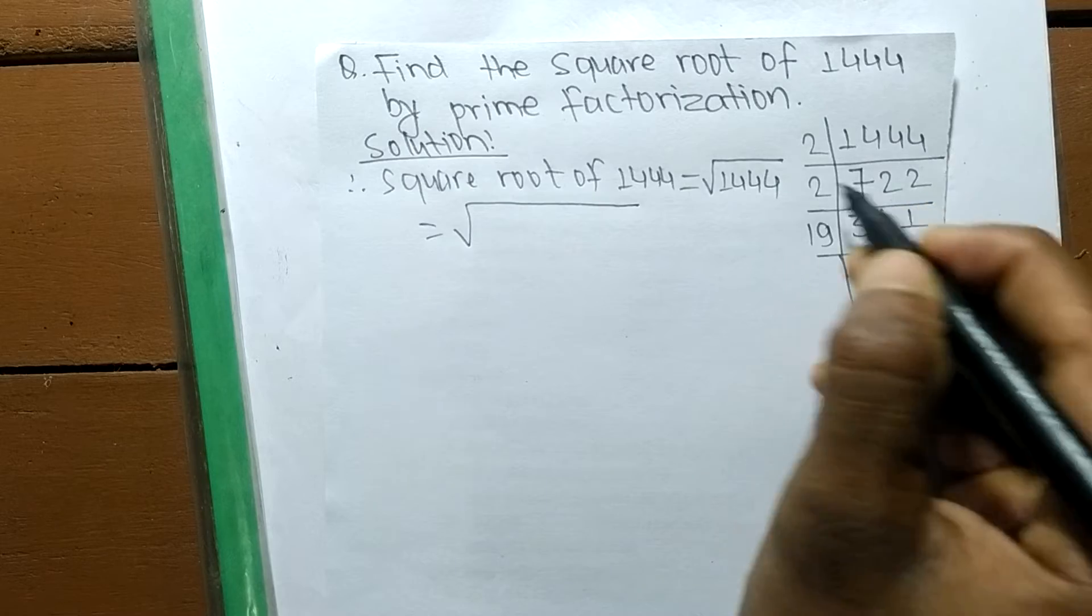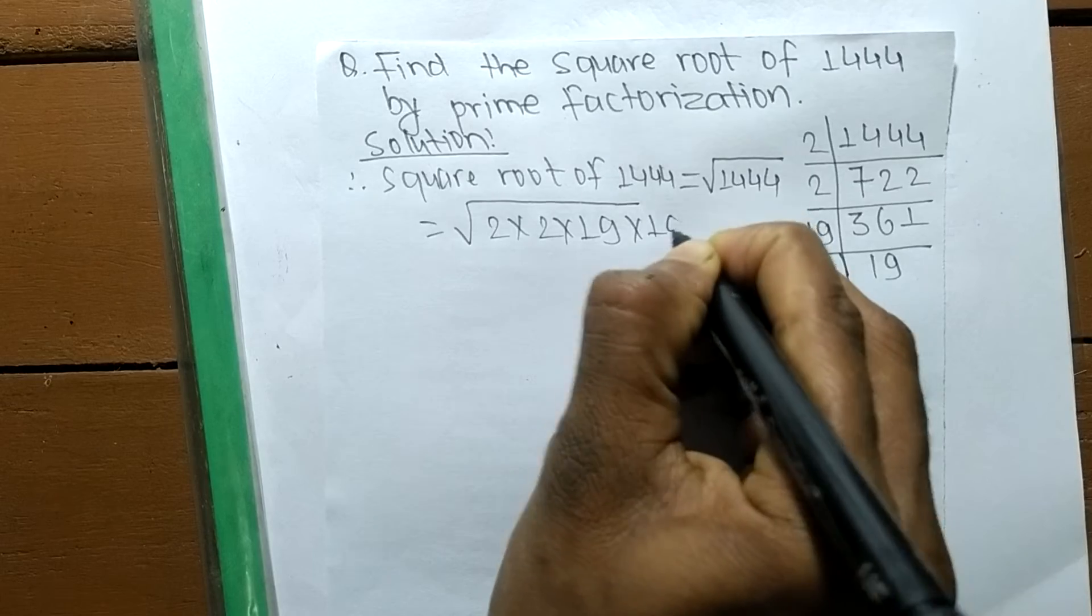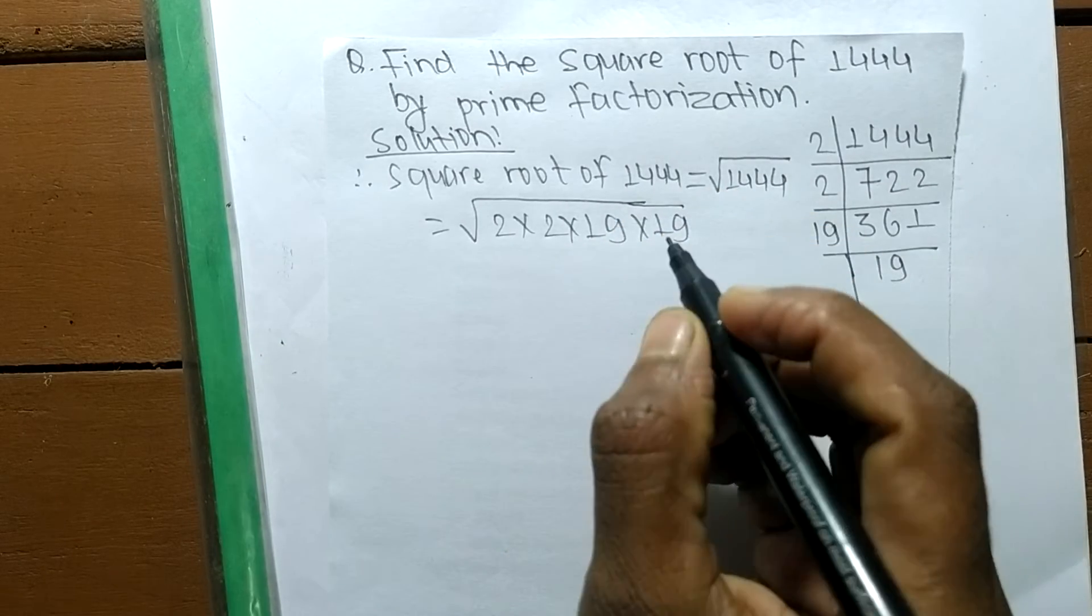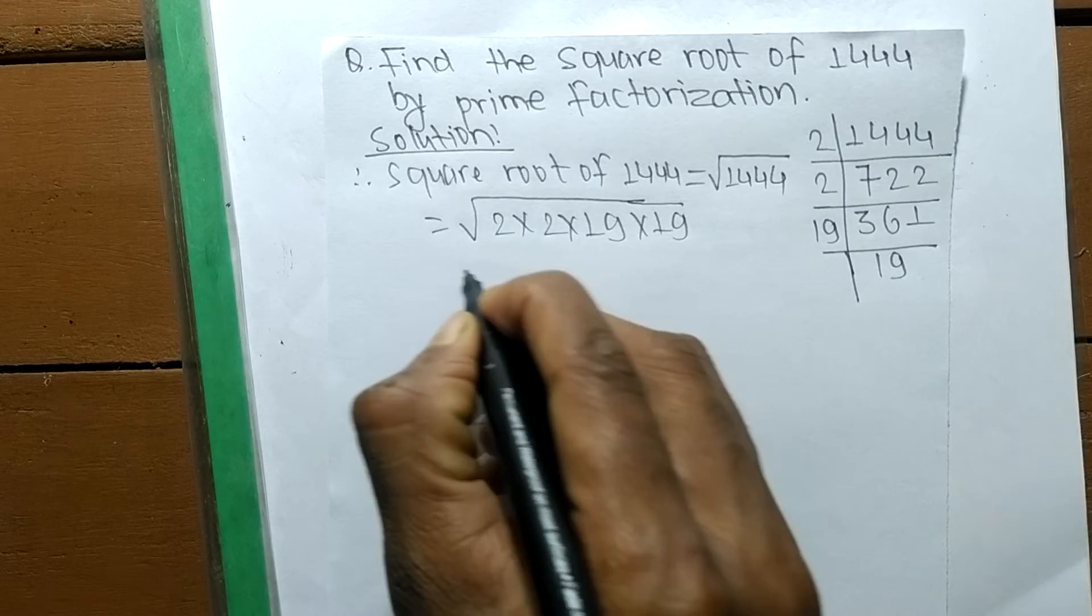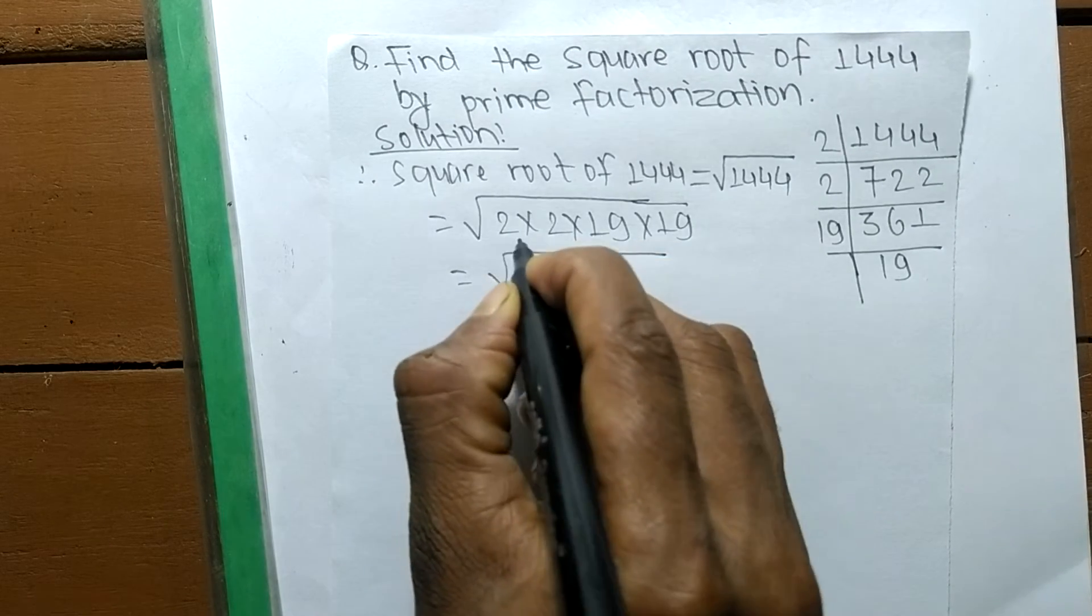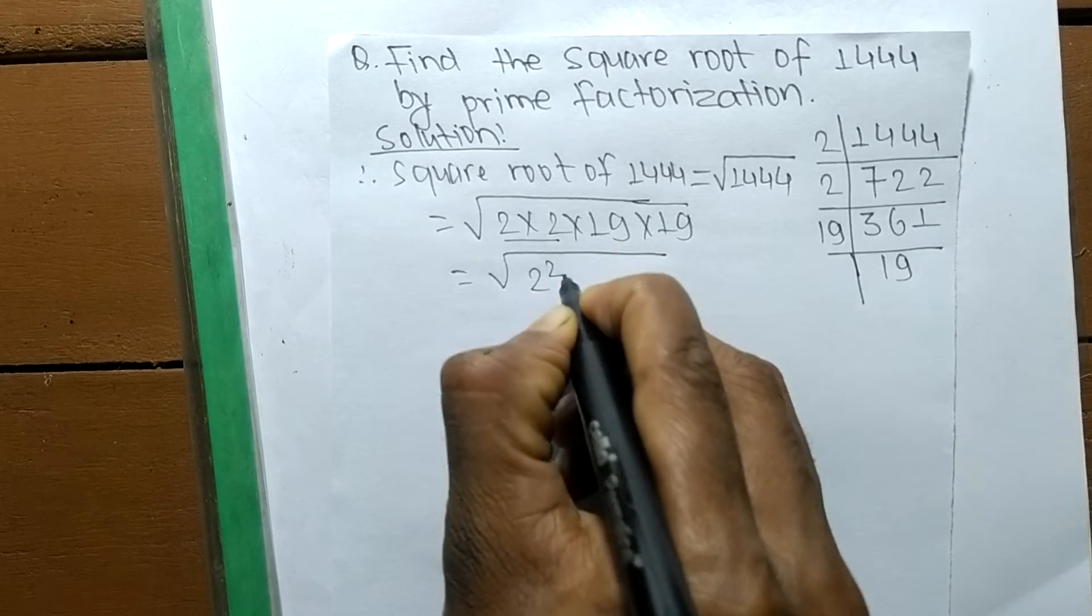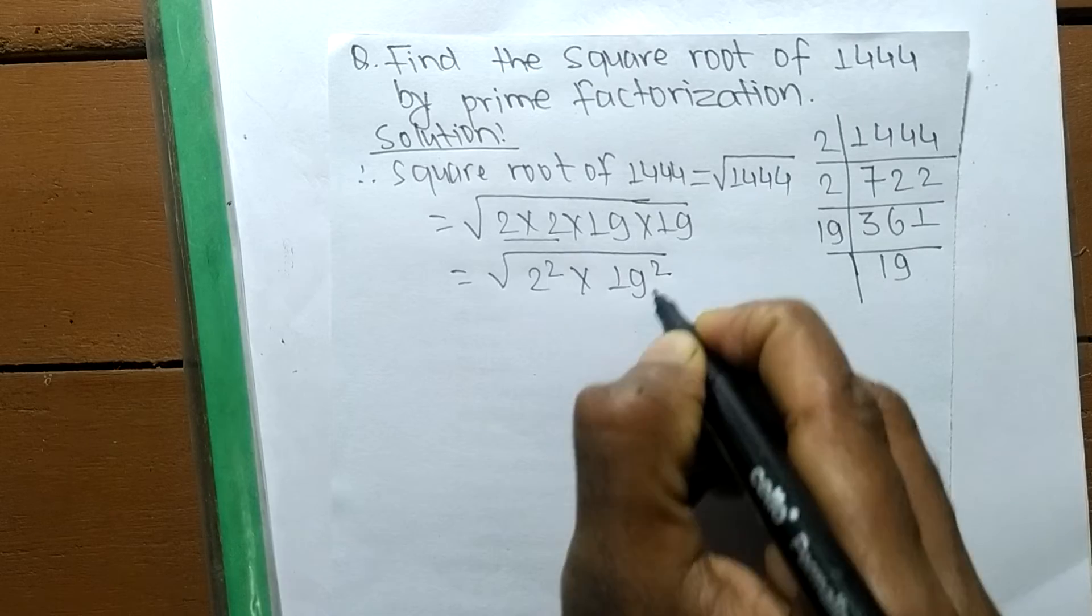So the prime factors of 1444 is 2 times 2 times 19 times 19. So we are finding here a square root, so now we make all these prime numbers into a square form. So 2 into 2 means it is 2 squared, 19 times 19 means it is 19 squared.